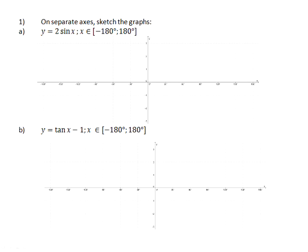On separate axes, sketch the graphs: y equals 2 sin x, x is an element of negative 180 to positive 180. So the graph 2 sin x has changed the amplitude of the parent graph, y equals sin x, from 1 to 2.